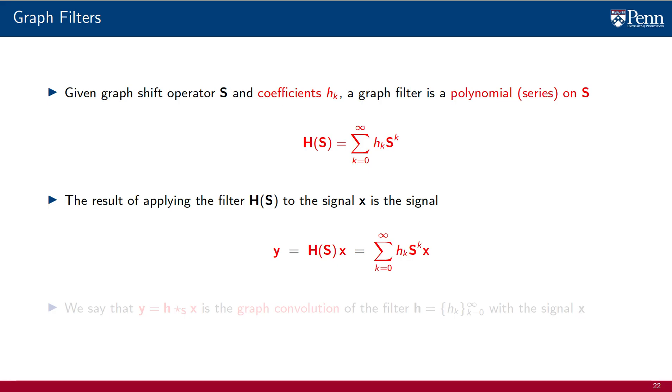We group the coefficients h_k in a sequence we call h. We then say that y is the graph convolution of the filter h with the graph signal x. We use the familiar convolution notation, annotated with a sub-index S, to indicate the use of the shift operator in its definition.